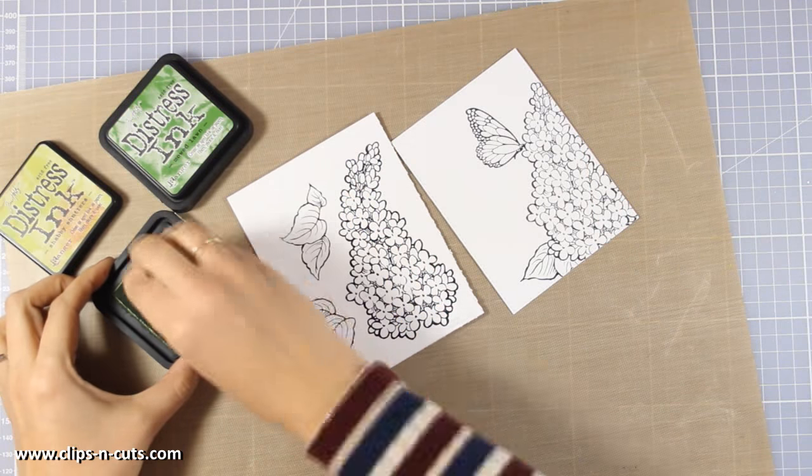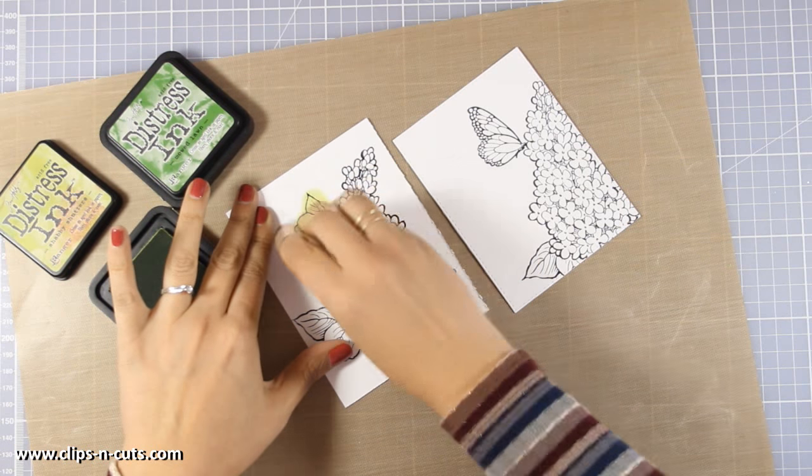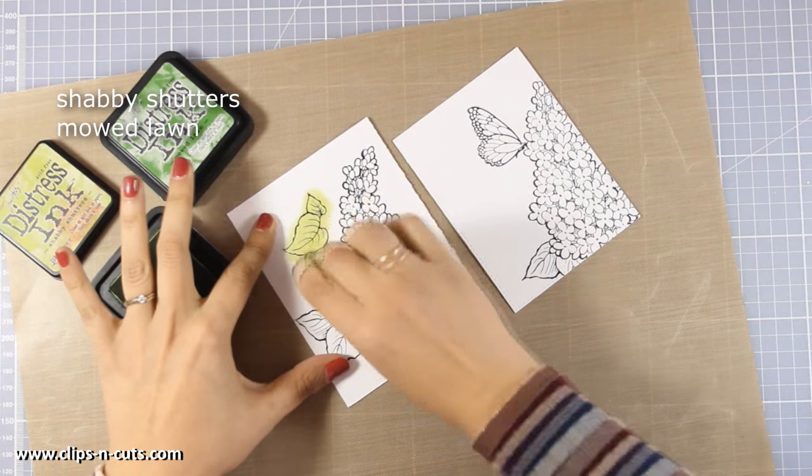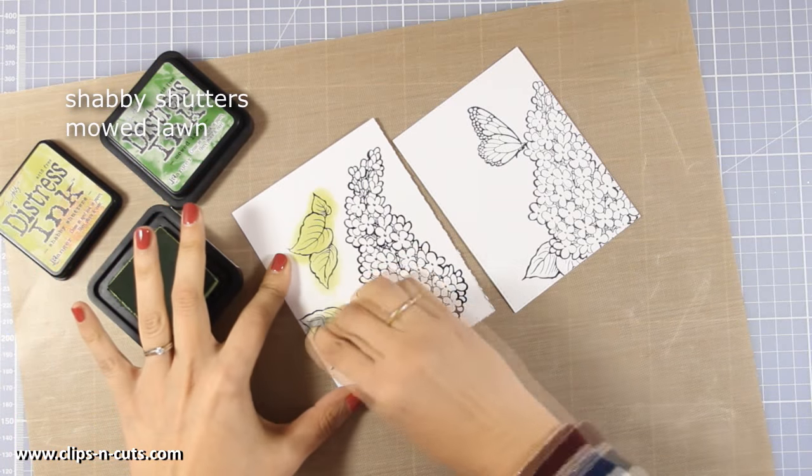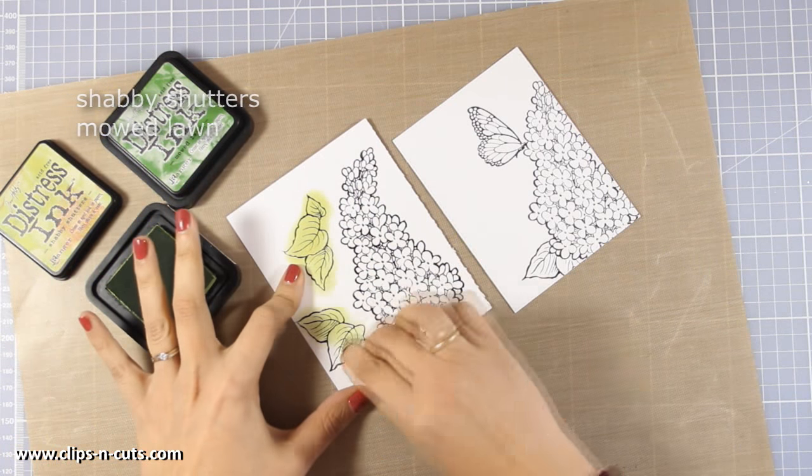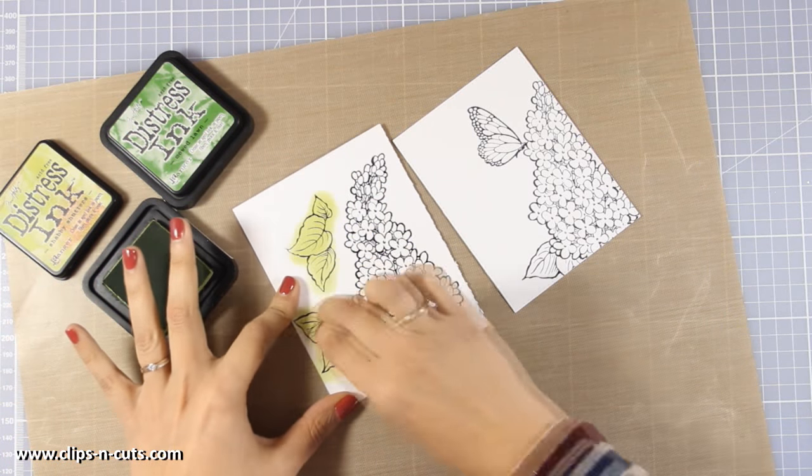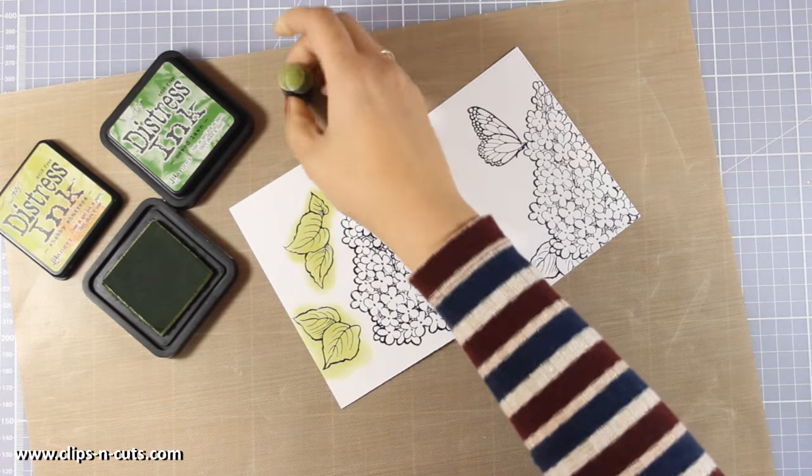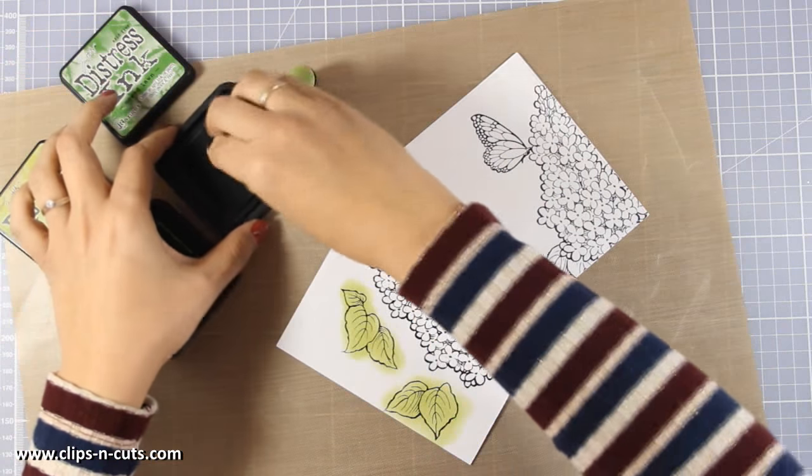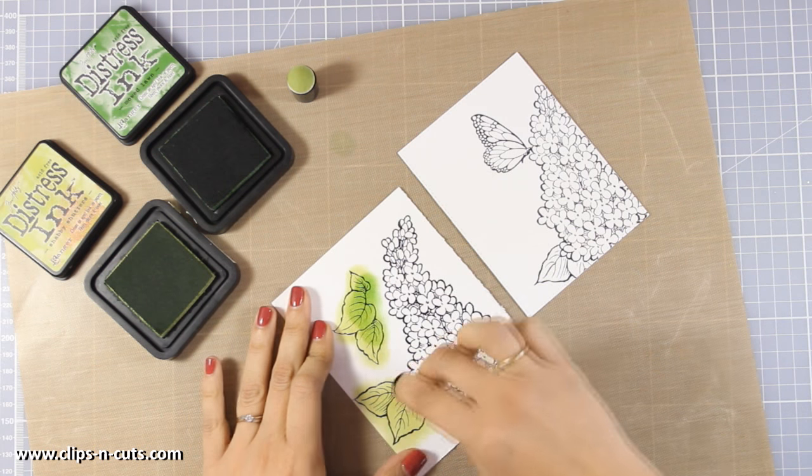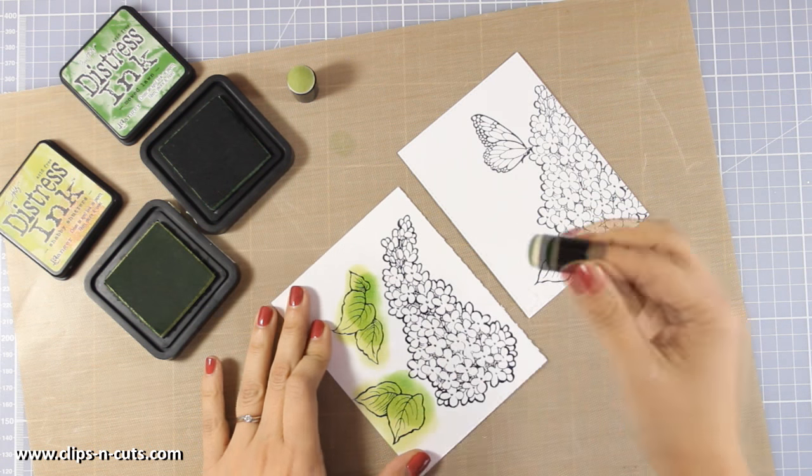And today I'm going to do my coloring again with distress inks and my finger dabbers. And that's just because I had all the supplies ready on my table since I made the card yesterday. So I am again using two colors for my leaves. I am applying first a lighter color and then I am going to apply a darker one at the base of the leaves. And this blends beautifully together.